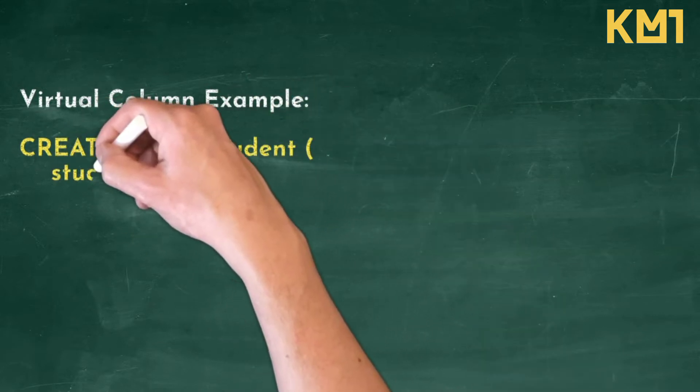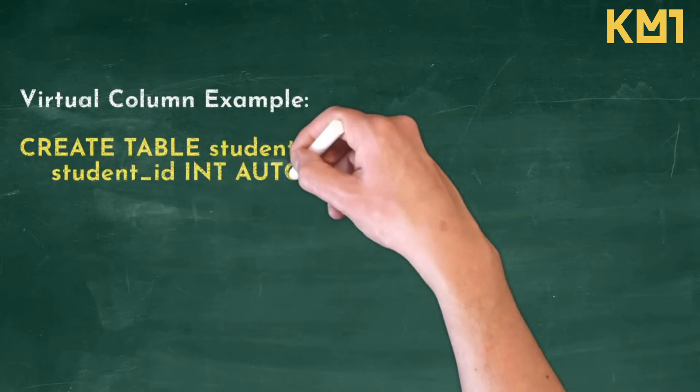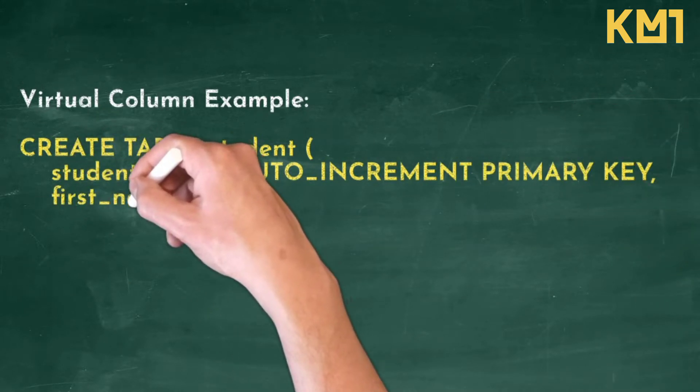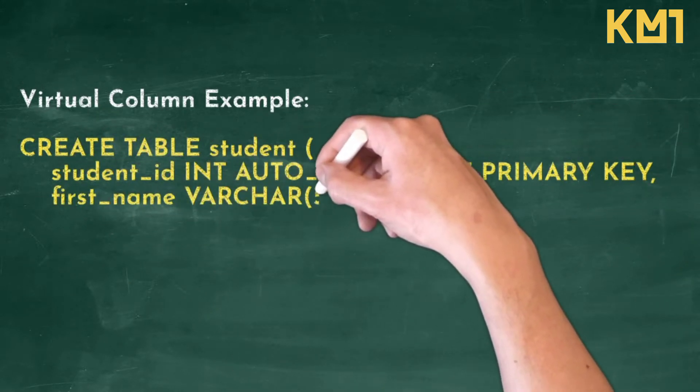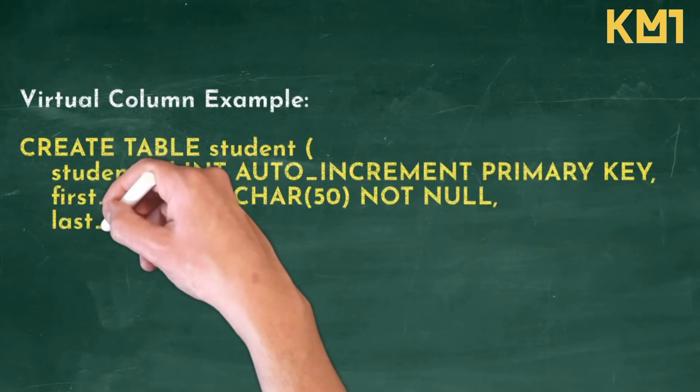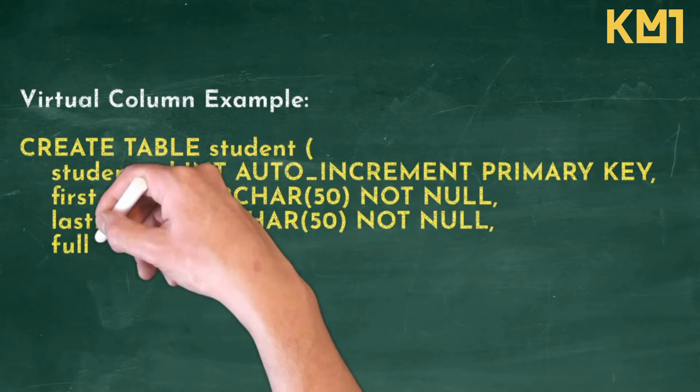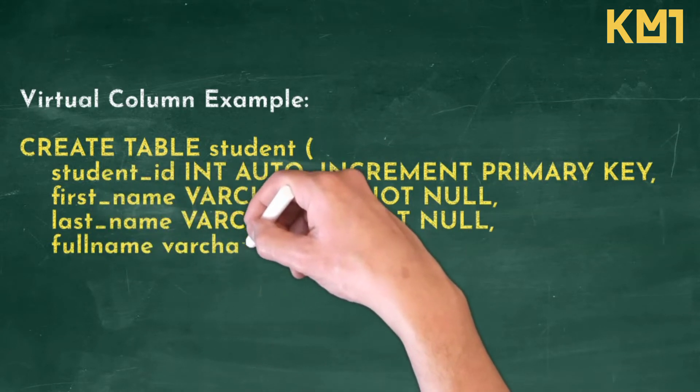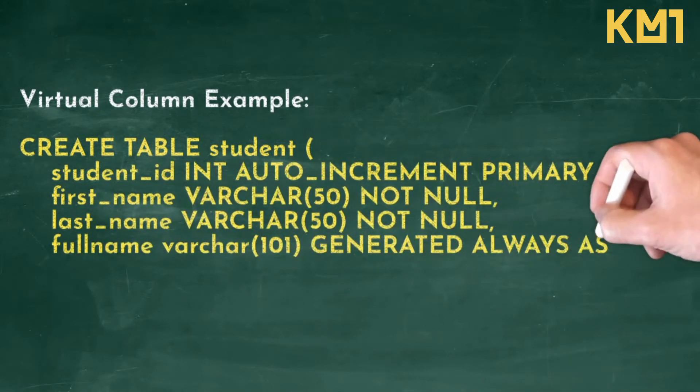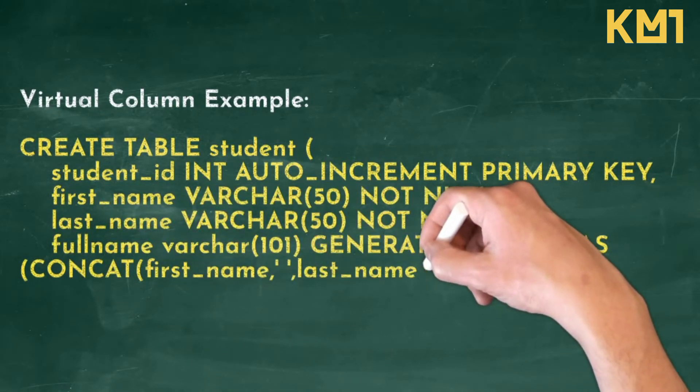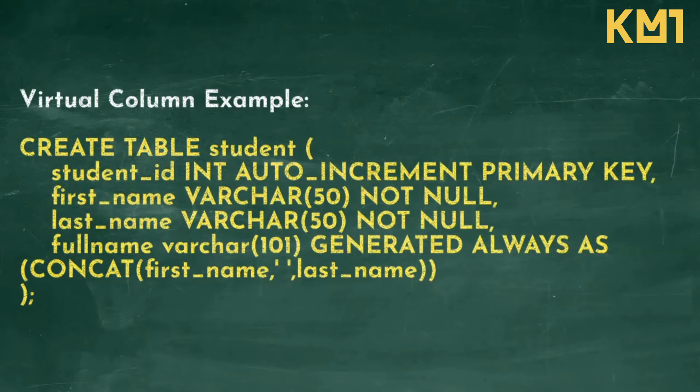We will create a table of student with some regular fields and one calculated field: student_id as an integer auto-increment primary key, first_name and last_name as regular columns, and full_name which is a generated column based on the concatenation of first_name and last_name with a space.